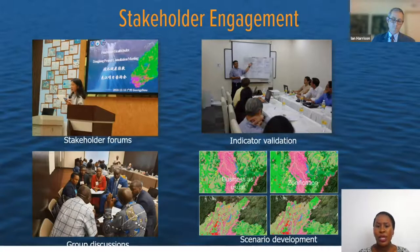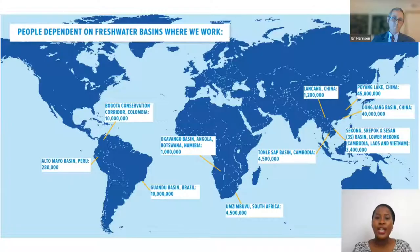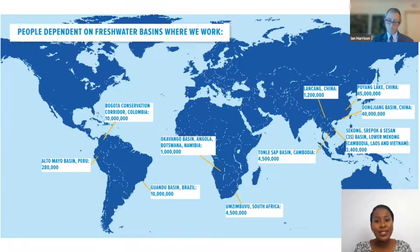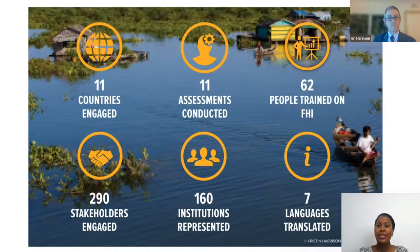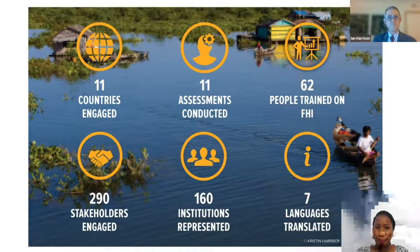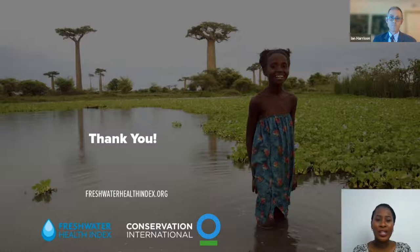The FHI is intended to be applied at a catchment level. The next presentations will give an overview of FHI application in Brazil and China. Overall, the FHI has been applied in 11 countries with 290 stakeholders and 160 institutions represented across all catchments. The next speakers are Maida Bezerra, who has been applying the FHI in the Guandu basin in Brazil, and Yi-Ching Zhang, who has been applying it in the Poyang Lake basin in China.